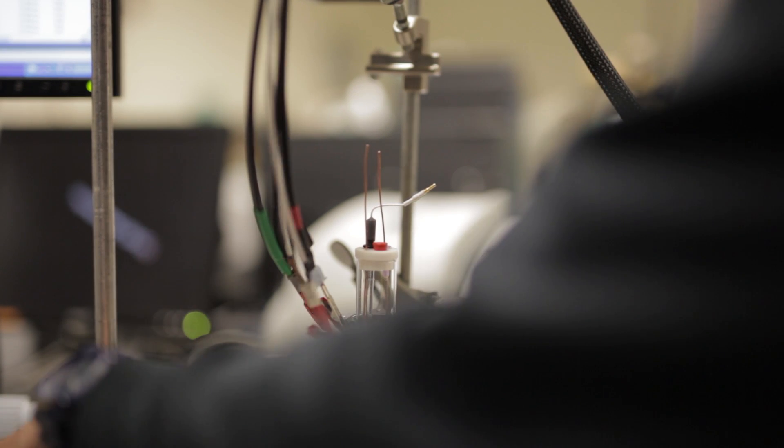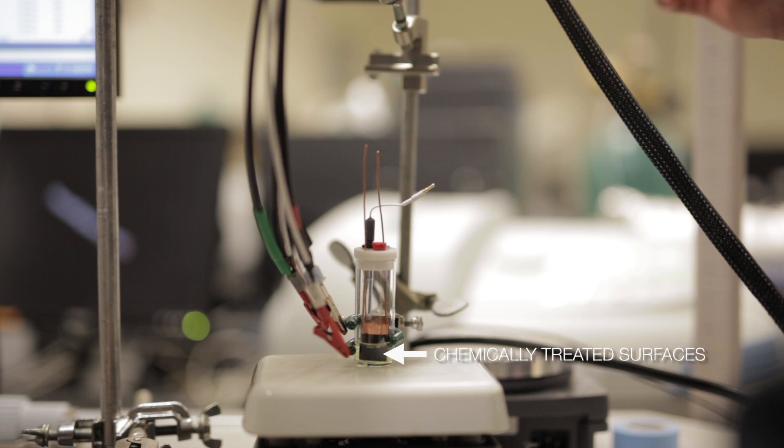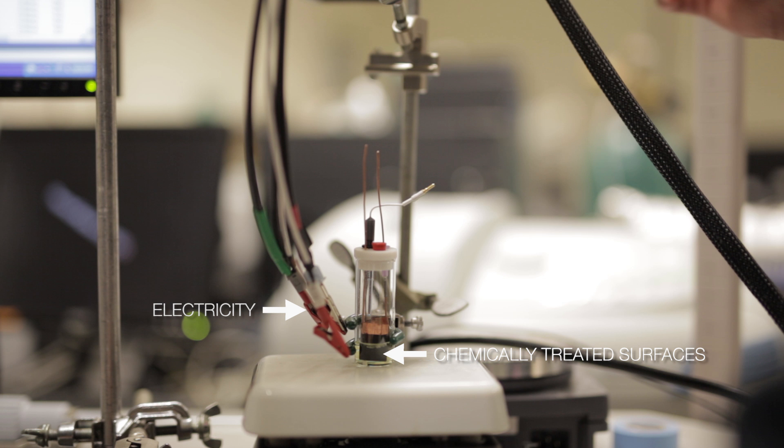Their system of removal involves two main parts: chemically treated surfaces and electricity. Here's how the system works. First, surfaces are coated with what are known as faradaic materials, which are materials that can undergo reactions to become positively or negatively charged.